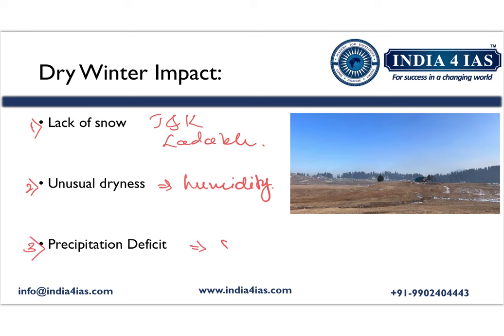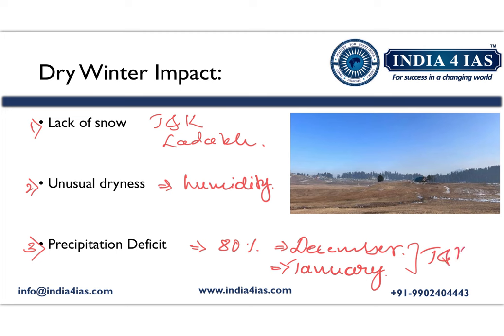The third impact is Precipitation Deficit. There is around 80% deficit in rainfall during the month of December, and there is no rain during January in Jammu and Kashmir. In the case of Ladakh, there is no rainfall in both January and December.